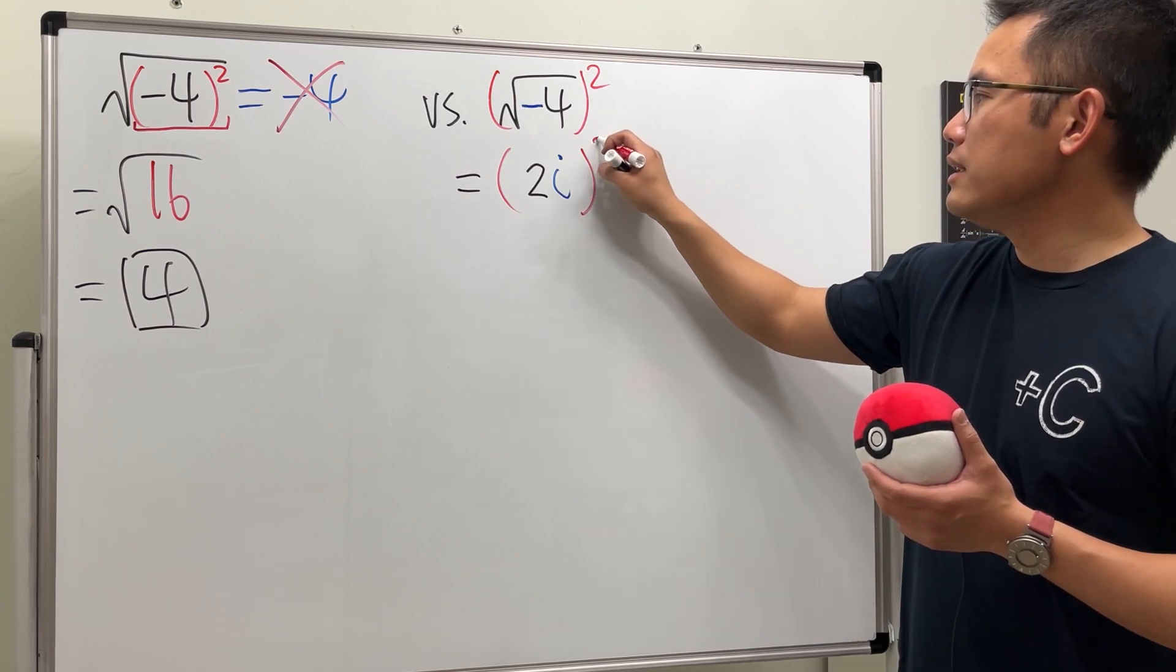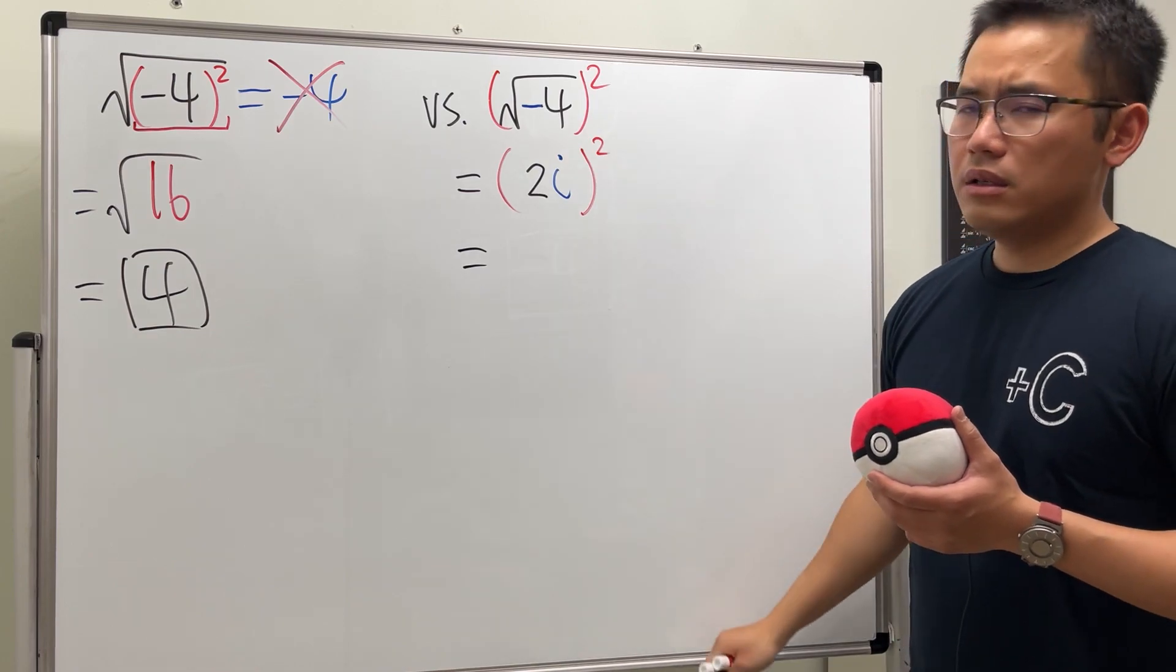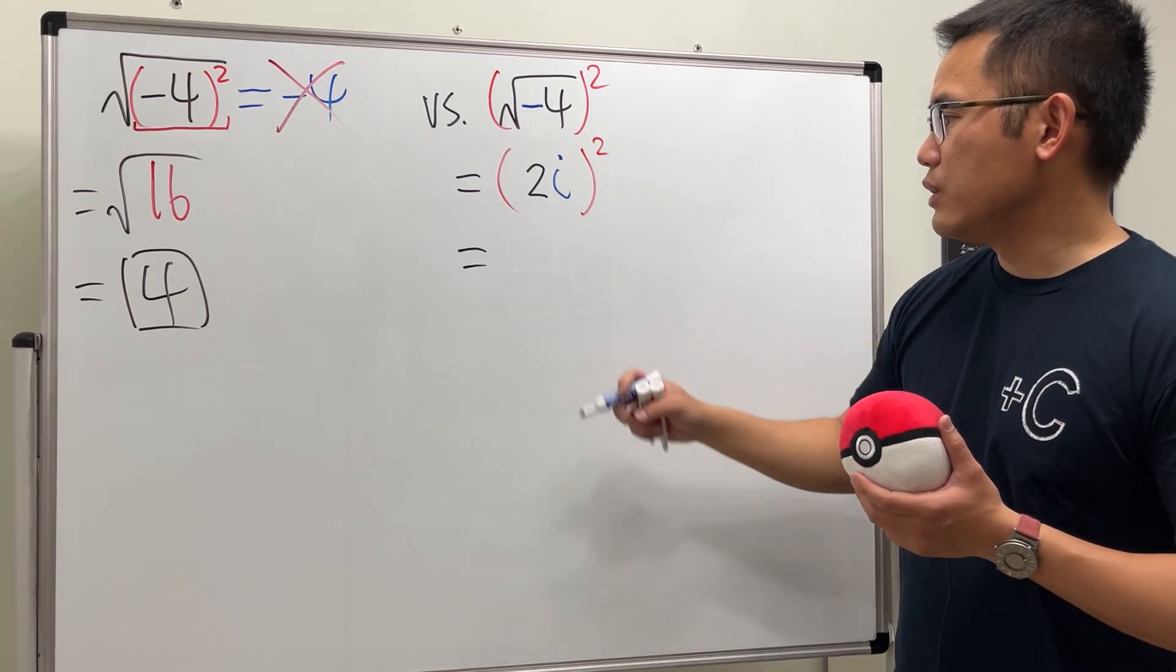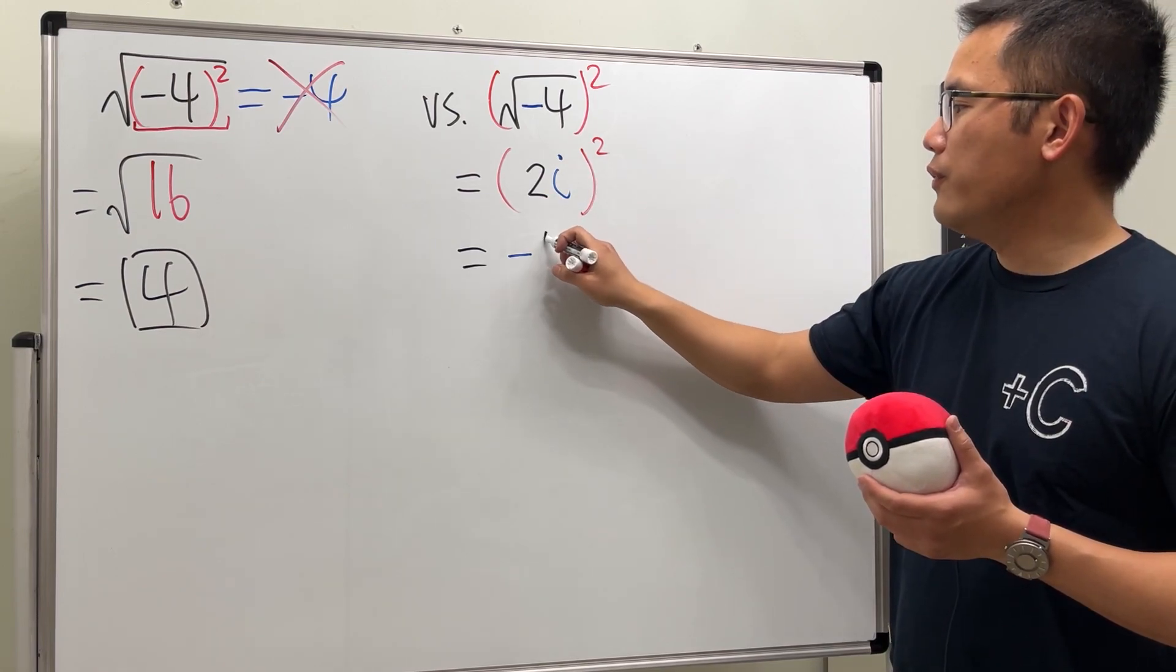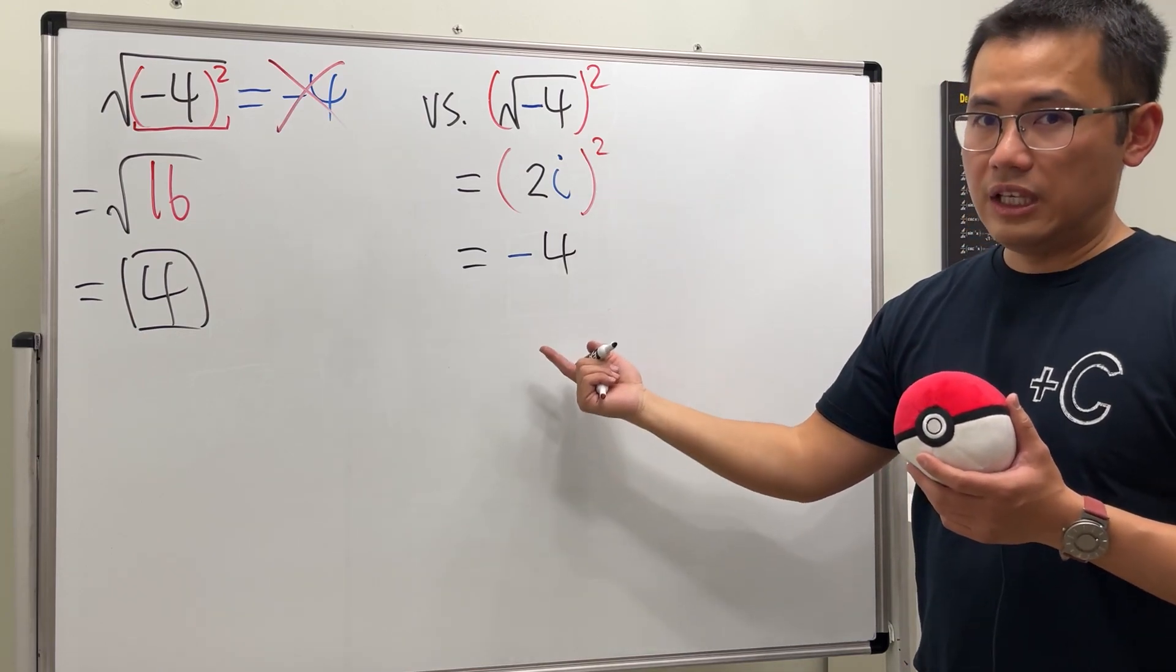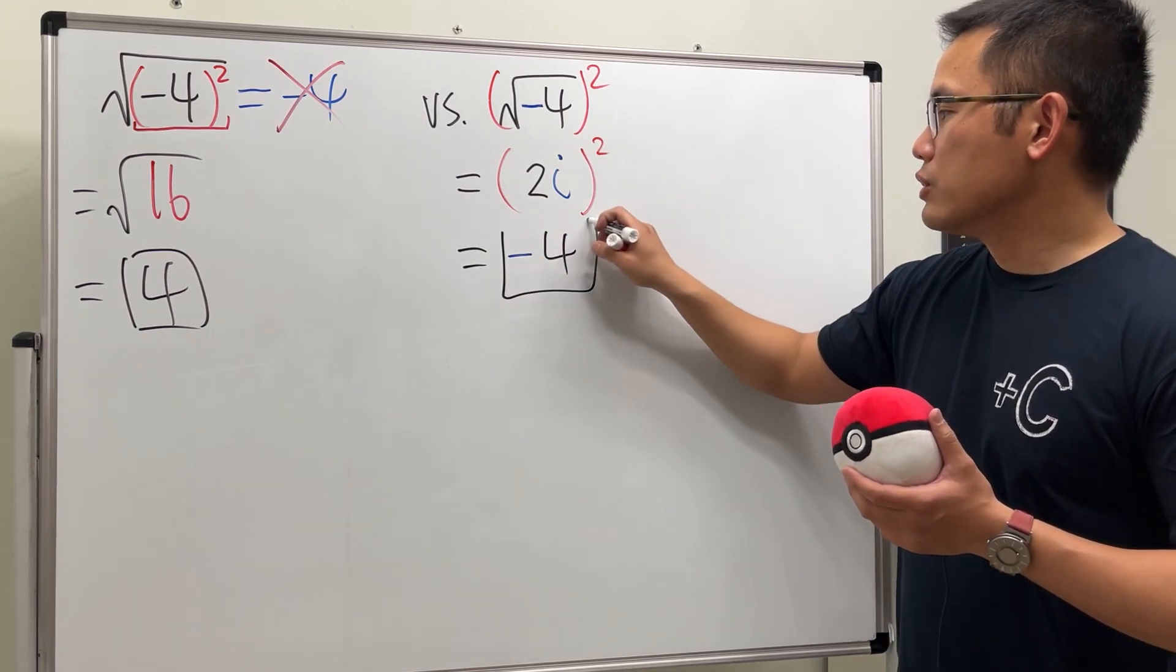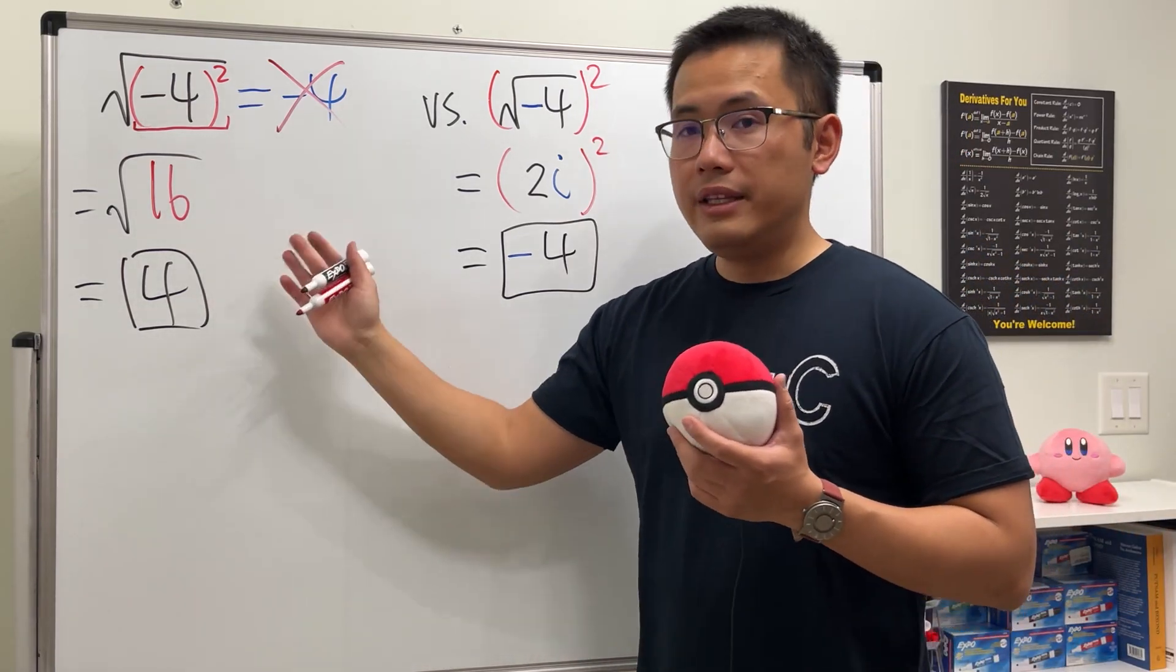And then we continue. i squared will by definition, that's negative 1, so I'll just put a negative here. And then 2 squared is 4. So we see 2i in the parentheses square gives us negative 4. So for this one, the answer is equal to negative 4, but for the first one, the answer is actually a positive 4.